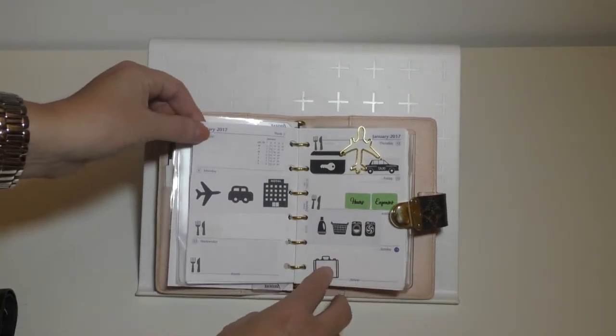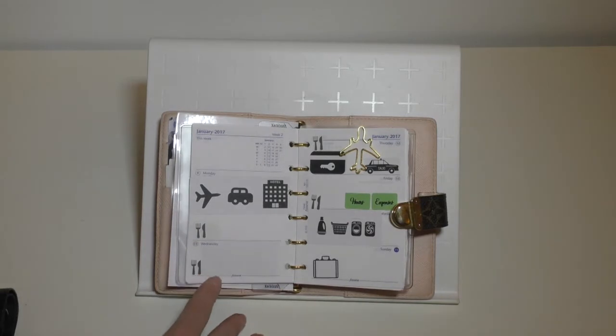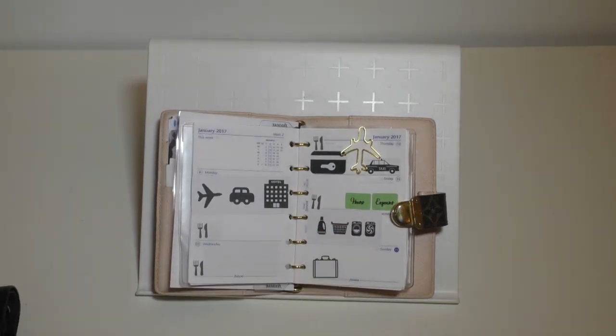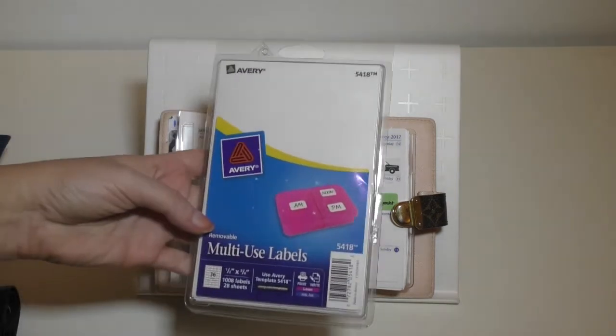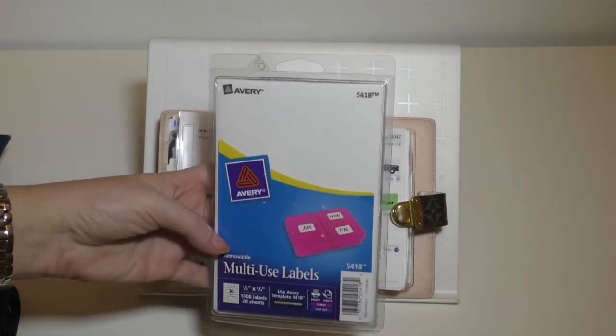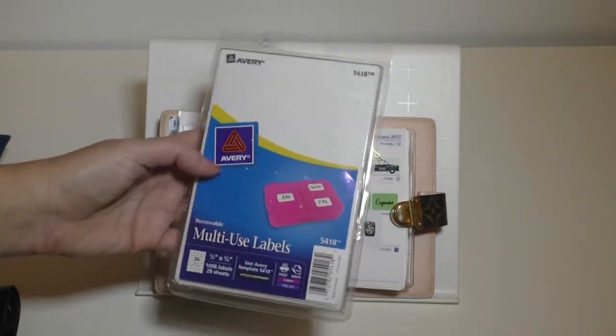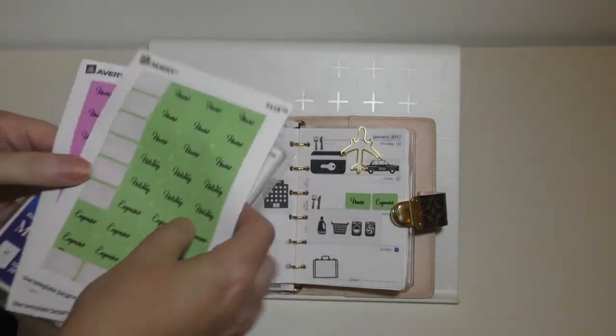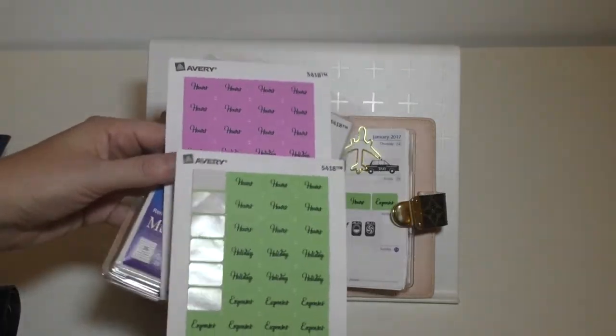Here we are. I made all these stickers using the Silhouette Cameo. I also used Avery labels. If you don't have a Silhouette Cameo, you can use your Avery—this is 5418—and just download the template from Avery and print whatever you want and then just put some color on them.